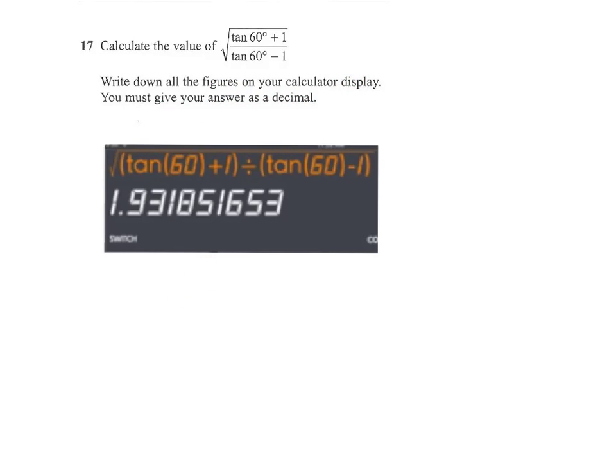What I'm showing you here is the insert from the calculator, exactly how I put it in. My calculator allows me to put the square root over everything, but I put brackets around the tan 60 plus 1 and around the tan 60 minus 1 so that they would divide each other first before we take the square root.